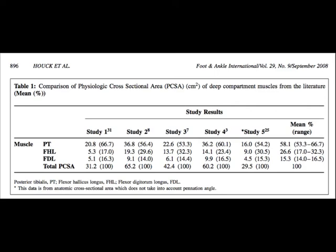This is a table from a study that we published in 2008 on the strength of the subtalar joint inverter muscles. Several of these muscles are agonists: the posterior tibialis, abbreviated PT; flexor hallucis longus, FHL; and flexor digitorum longus, FDL. These deep compartment muscles all act at the subtalar joint, but they also have actions deep into the foot, the midfoot, and the forefoot.